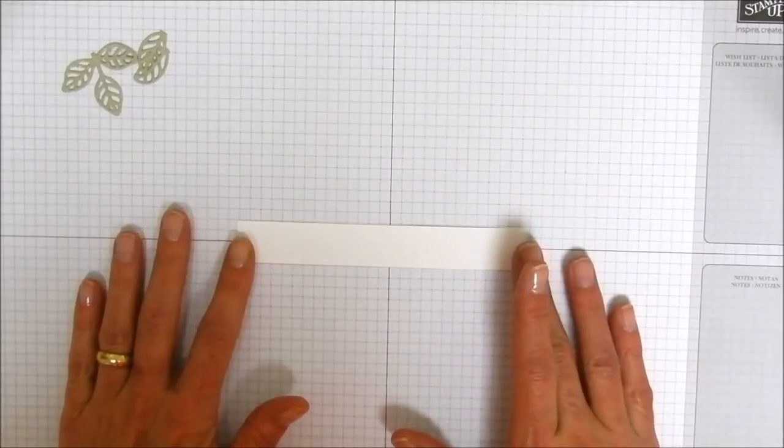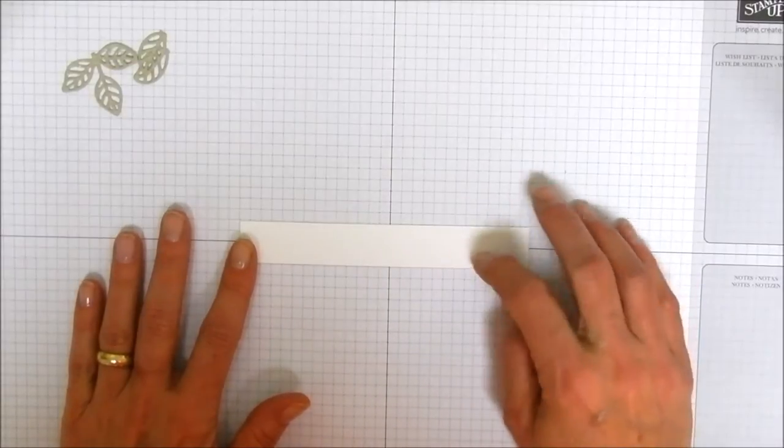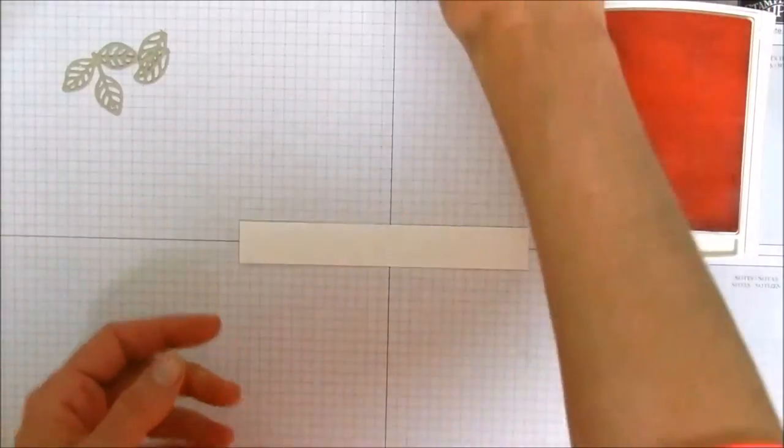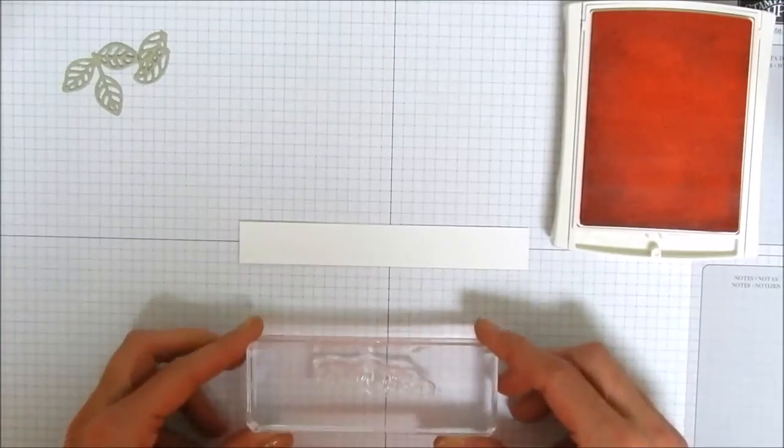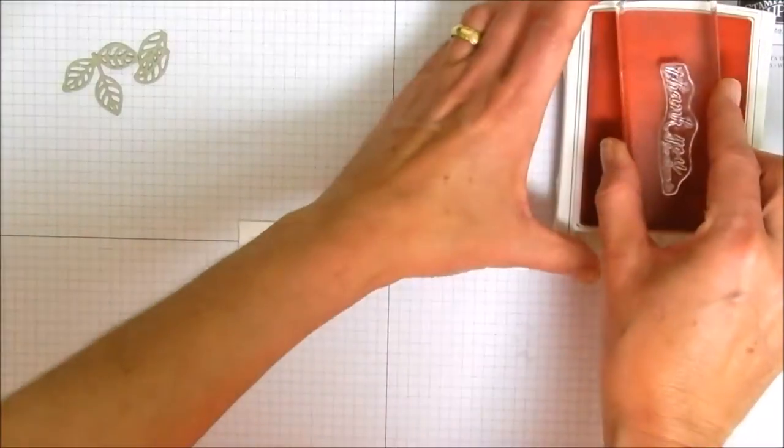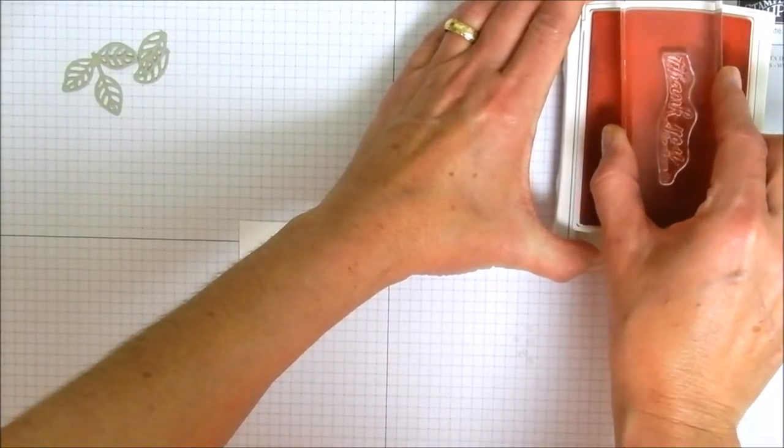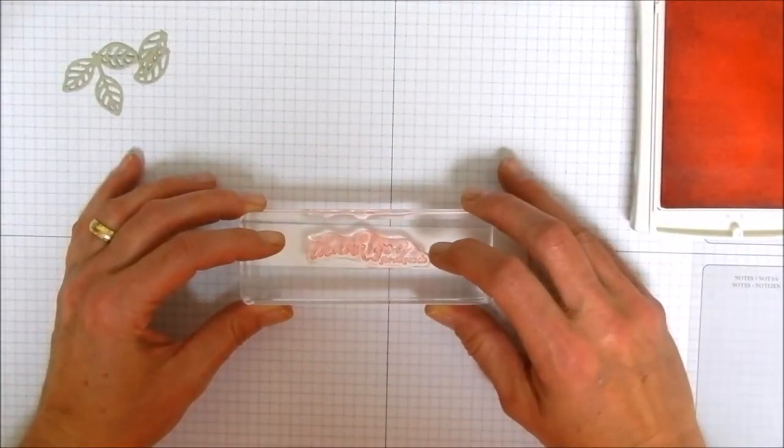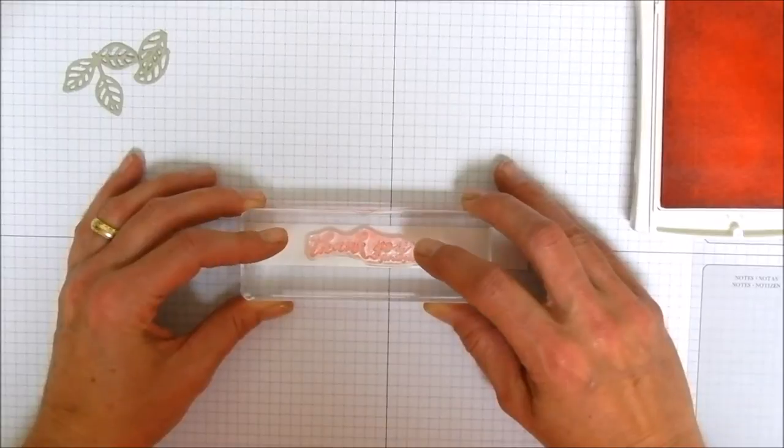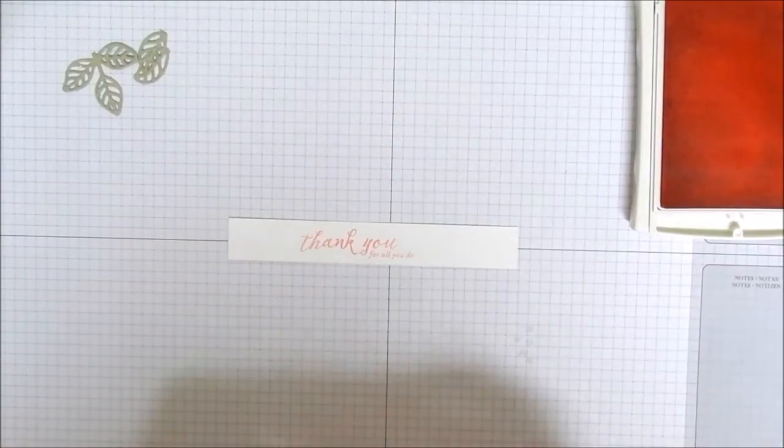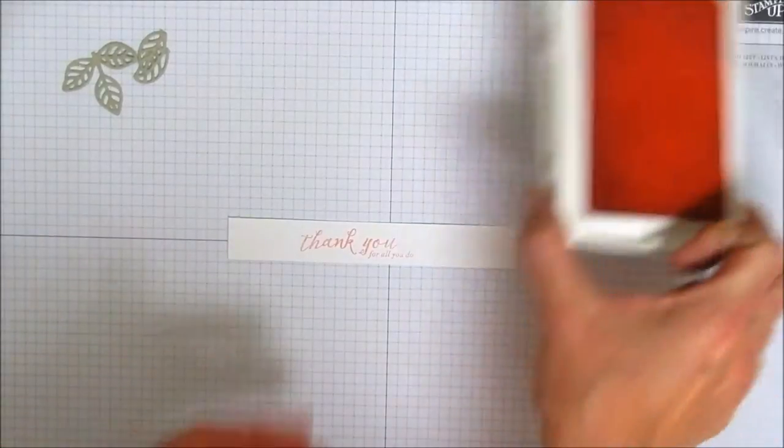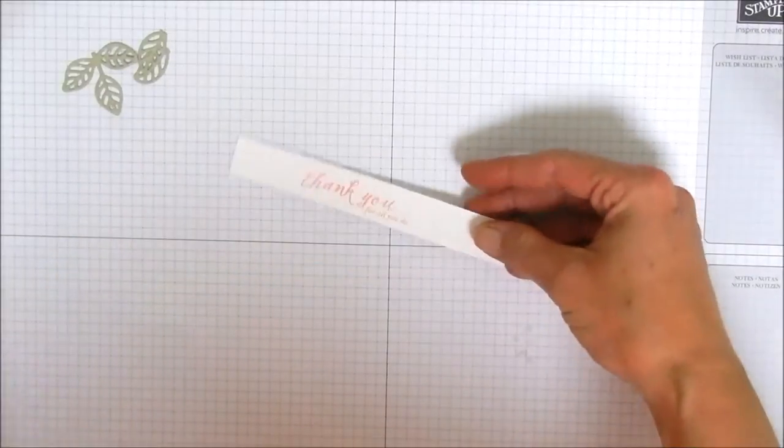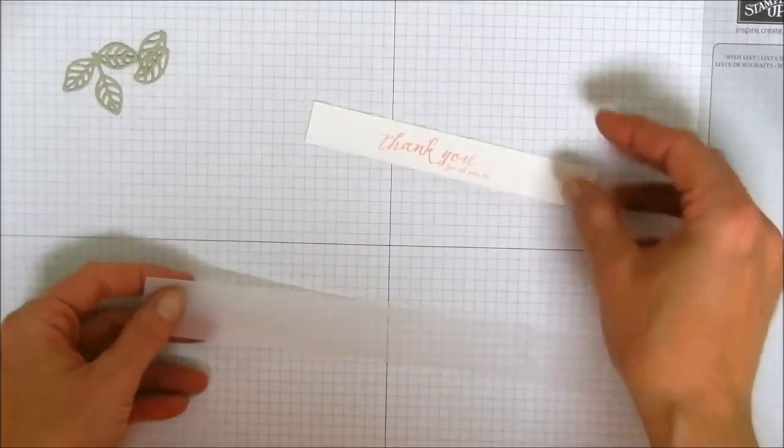So I'm going to line up my white strip here and I'm going to stamp the sentiment in Flirty Flamingo ink. Here I've got it mounted on a clear block and this is a clear stamp which I really like because you can see through them when you're stamping on something that's kind of skinny like this and make sure that you are getting it in the right place. And so we're just going to stamp that down and straight up and there is our sentiment for our card.